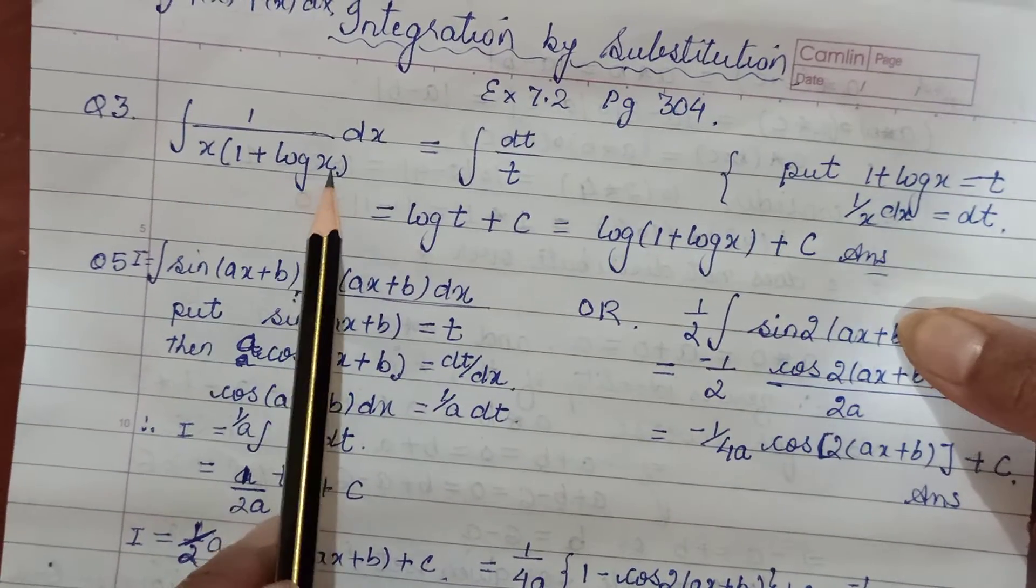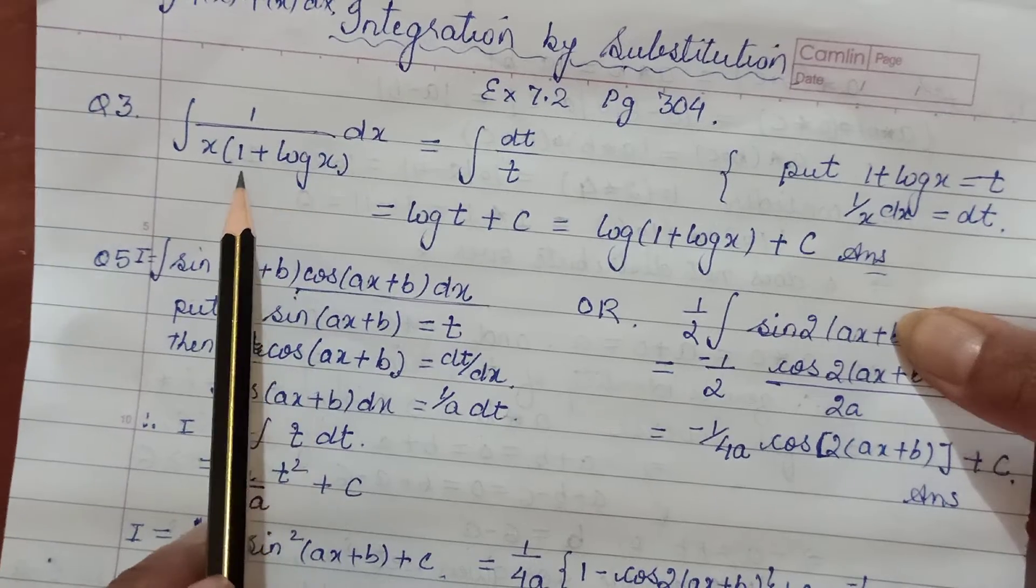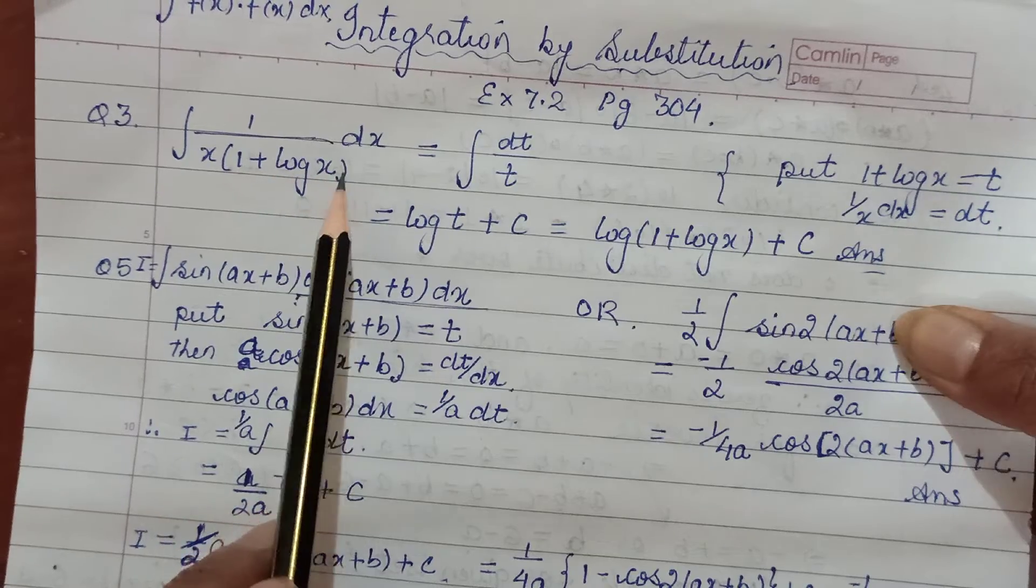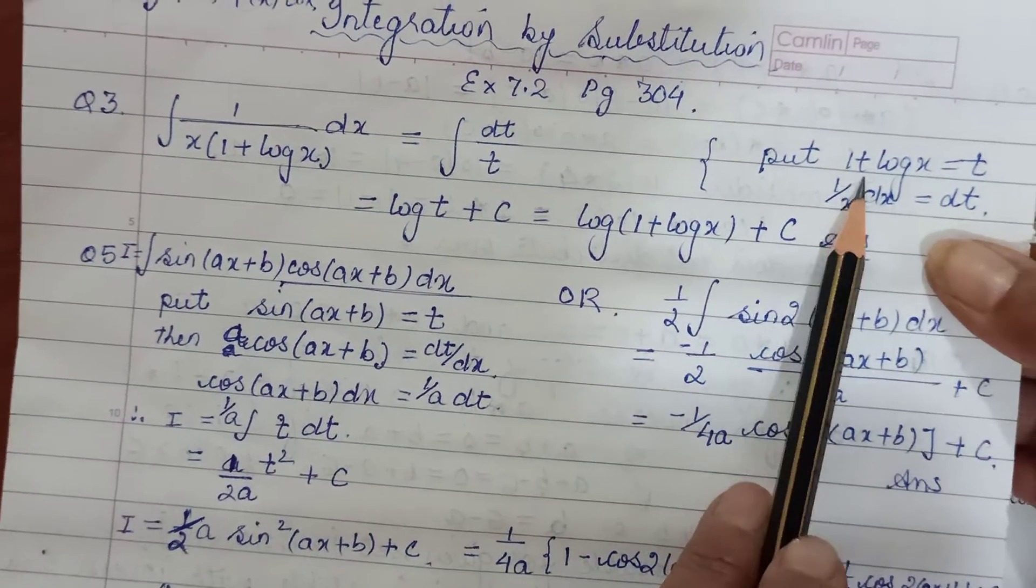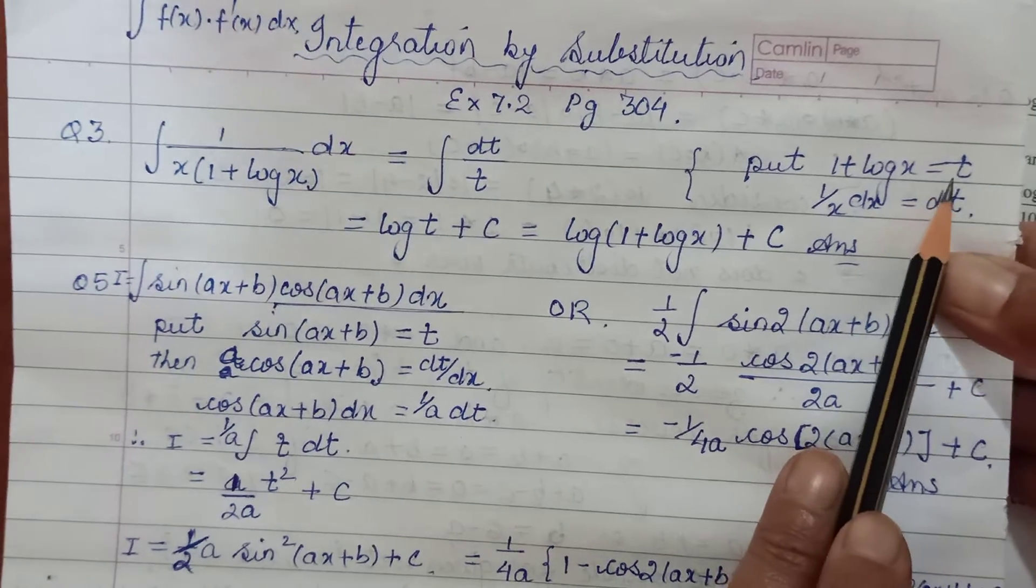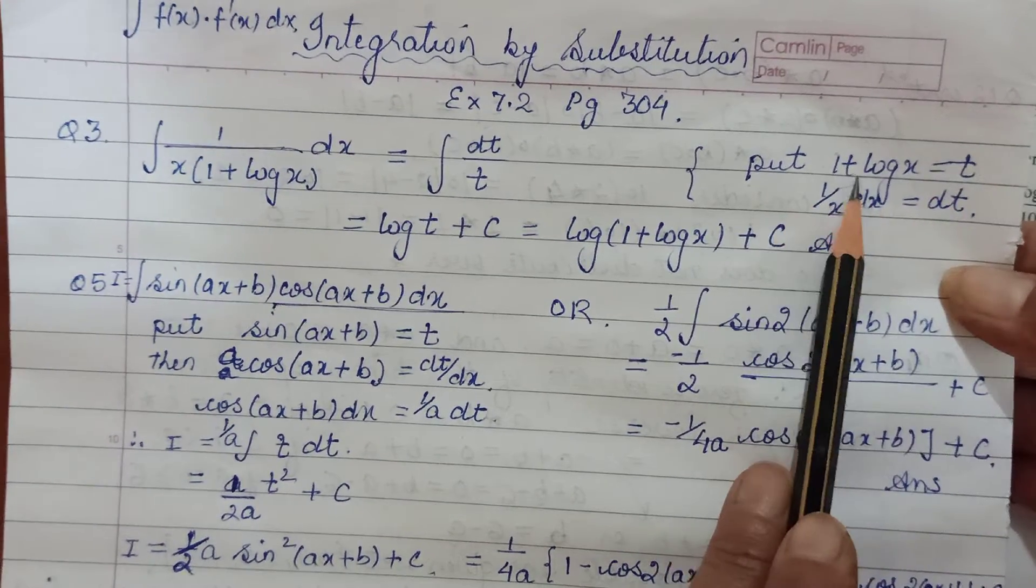To make my writing simpler I've taken this whole expression as t. So we will say put this as t. Jiska derivative aapko mila hai usko you take as some variable t, so 1 plus log x will be taken as t. Then differentiating, 1 ka derivative toh vanish hogya, log x kao ga 1 upon x.